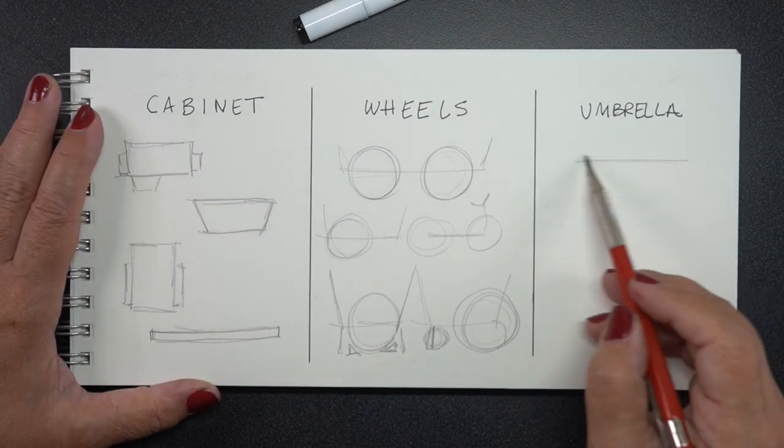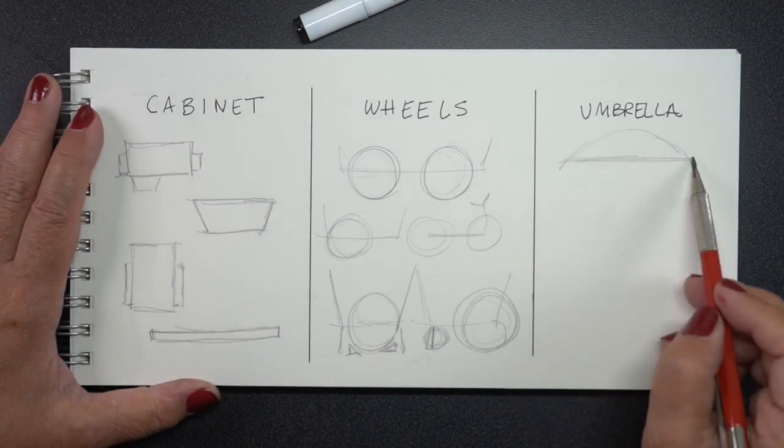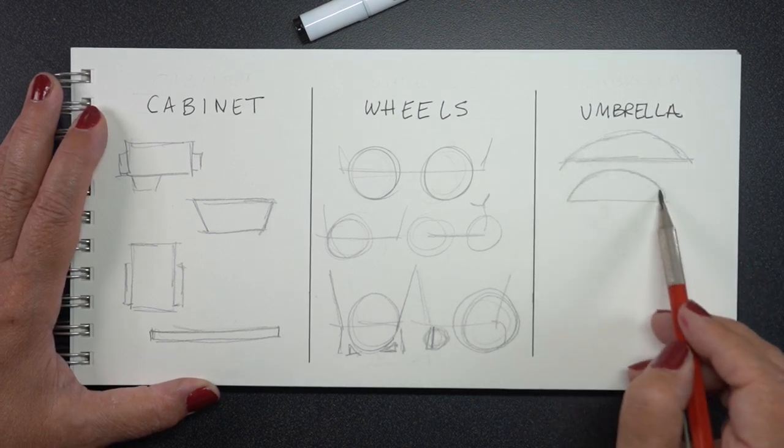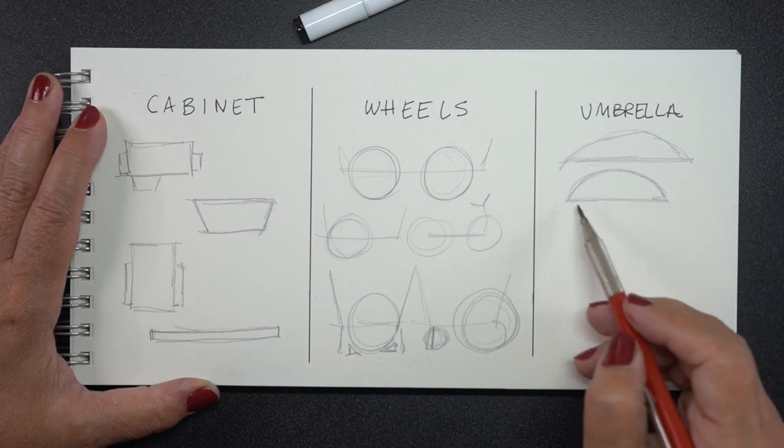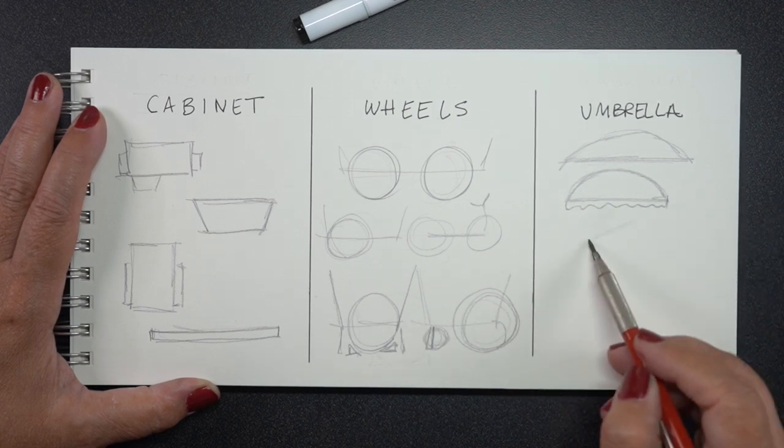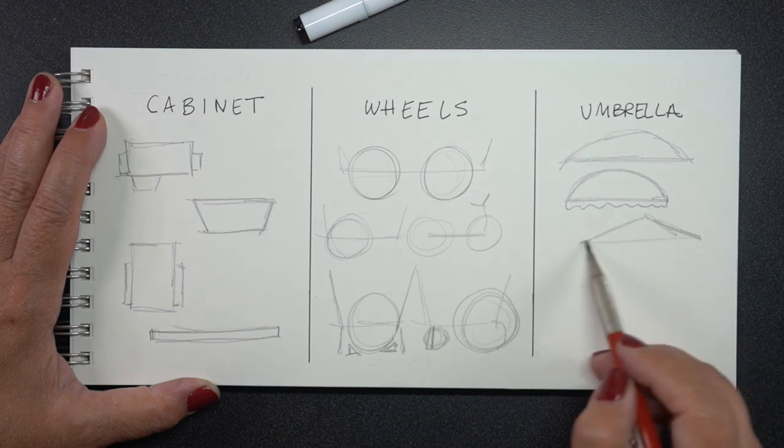So you've got the cabinet, you've got the wheels, and then the umbrella. The umbrella you can design any way you want. Anything. Like just make a half circle with a line across it and make a very simple one. And you can make it a little thicker, you can make it a little thinner. You can give it a fluted edge, I guess a scalloped kind of edge to it.